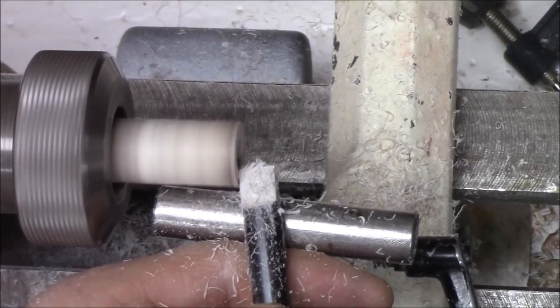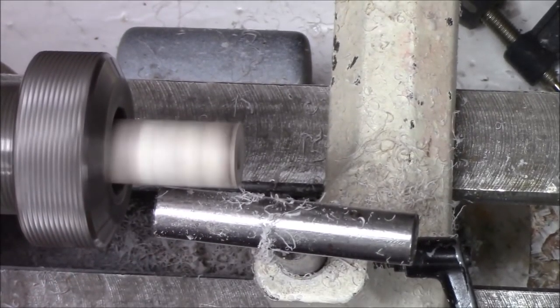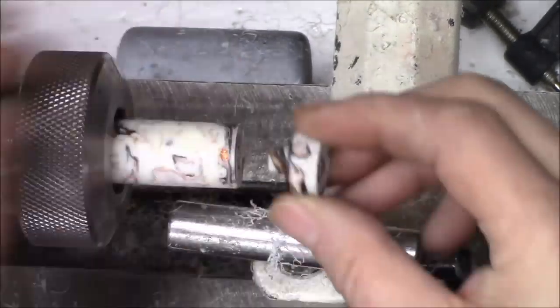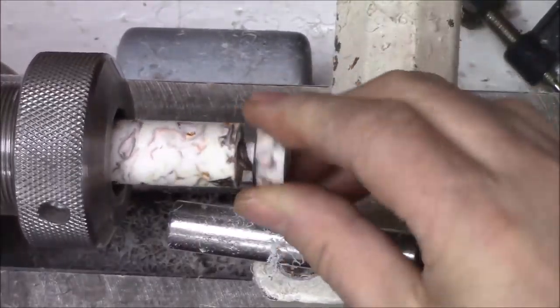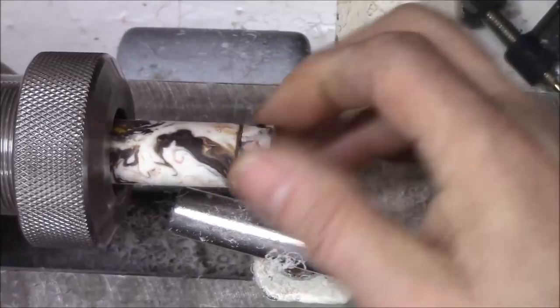In part number one we turned our blank around, drilled and tapped our blank, and turned the finial. Now let's pick up where we left off in part number one.